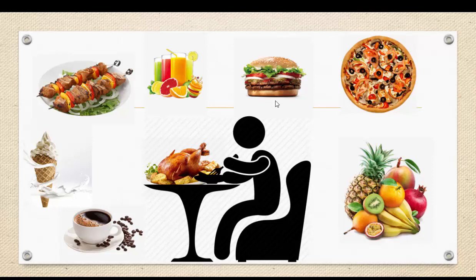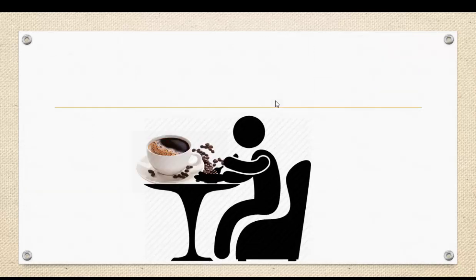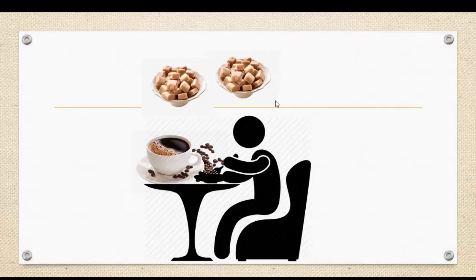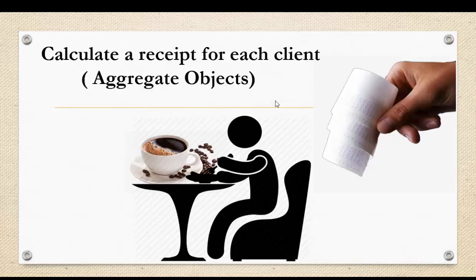Even inside all those items there are ingredients we need to calculate. For example, if he asks for a coffee, he might need something extra — like a template flavor, milk, or one, two, or three parts of sugar in his coffee. Then we need to calculate a receipt for each client. This is called aggregate objects — we have one object that contains many objects inside it.